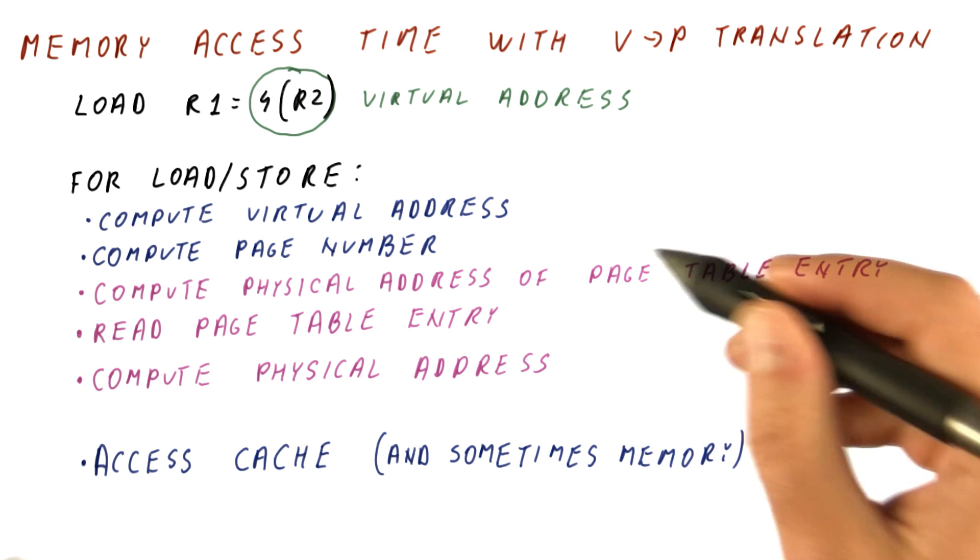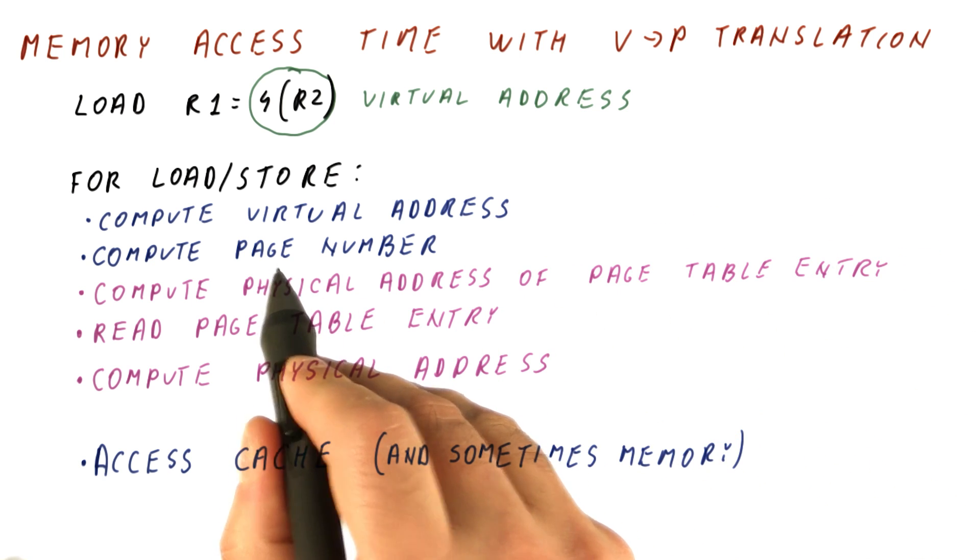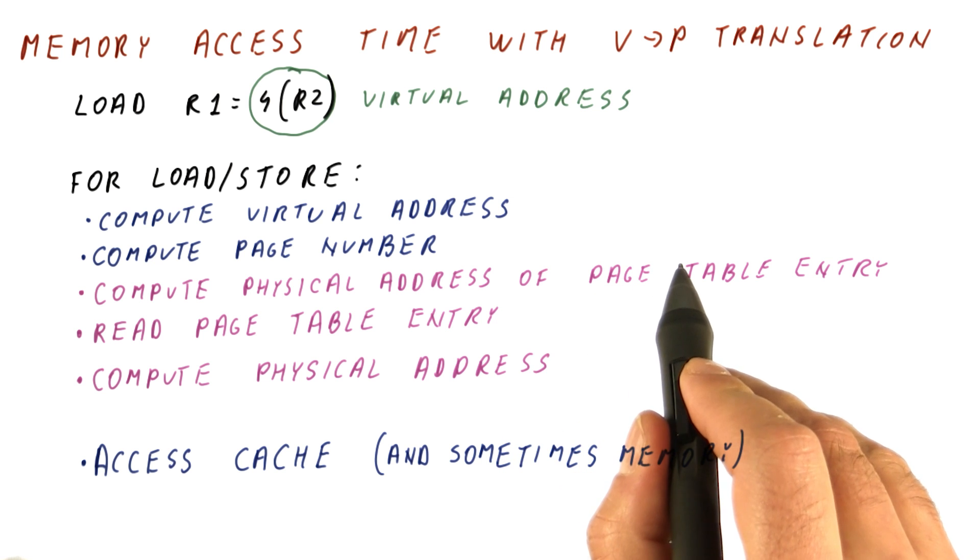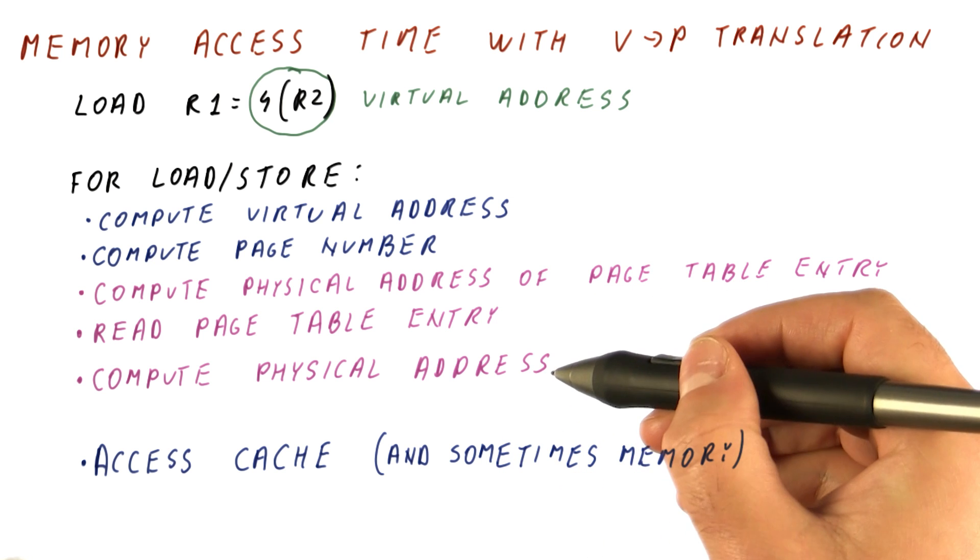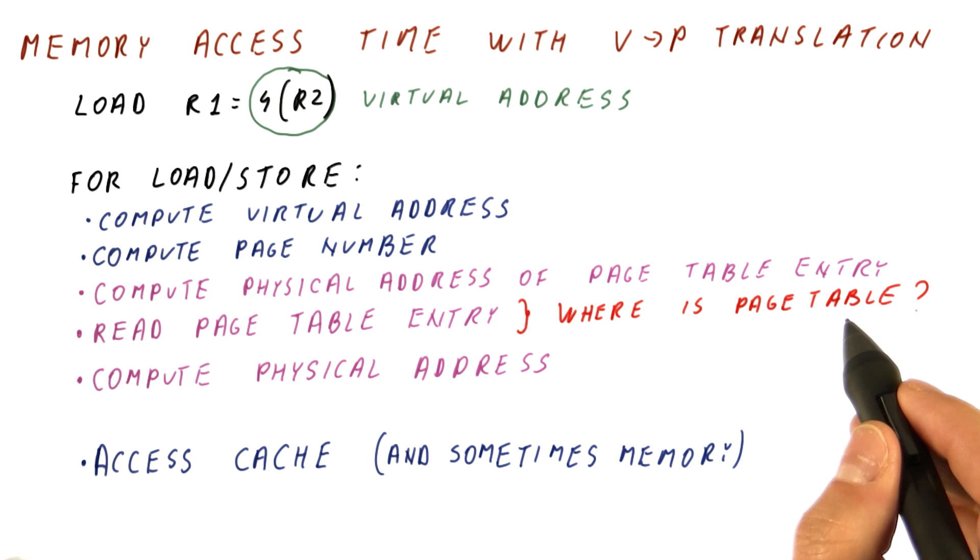So how fast is this? Well, this is fast because it just means adding the page number to some sort of address. This is fast because it only means combining two numbers that we already have. But how fast is this? And for that, we need to ask ourselves, where is the page table?